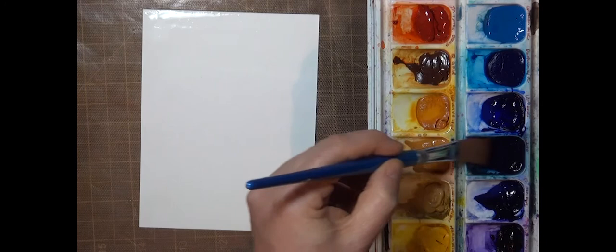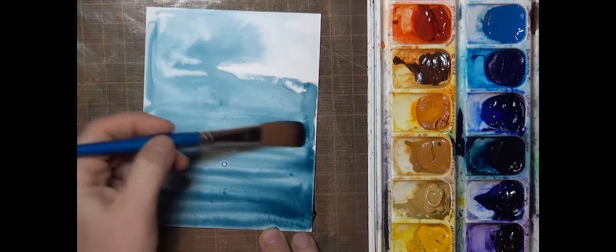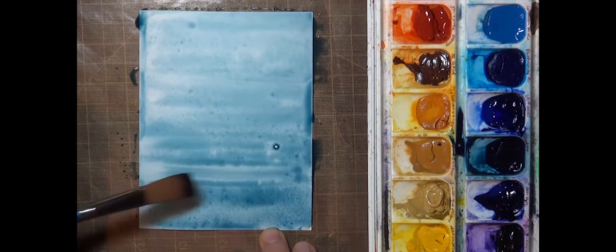For this next sample I used Core watercolors, and I'm creating a wash background. So I started with a layer of clean water, and then I'm brushing paint into it and letting the water move the pigment around, and I kind of have a color darker toward the bottom.